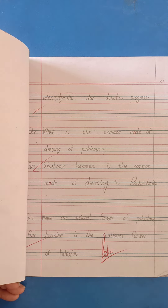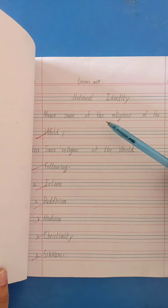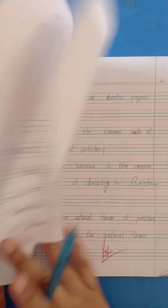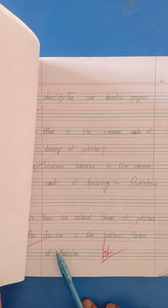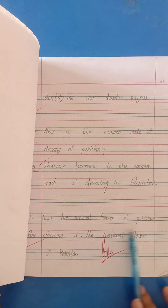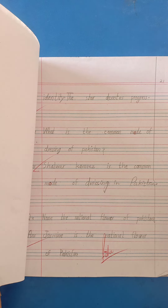Dear students, you have to memorize question number 1, 3 and 4 of lesson number 17. To repeat: Question number 1 — Name some of the religions of the world. Question number 3 — What is the common mode of dressing in Pakistan? Question number 4 — Name the national flower of Pakistan. You have to memorize these 3 questions and after memorizing, write them in your rough copies.